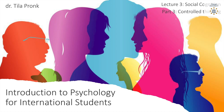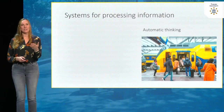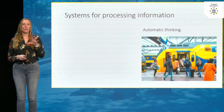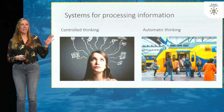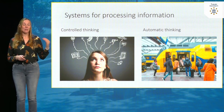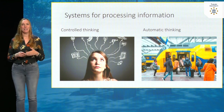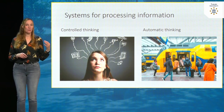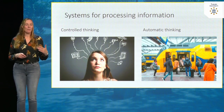This is part three of lecture three. In this part we're going to be diving into the controlled route of processing information. We have the automatic route in which we rely on heuristics while making decisions, which is efficient and quick, but also flawed. Now we zoom into the controlled thinking style — the more superior thinking style — but we're going to see that this controlled route is also a bit flawed.